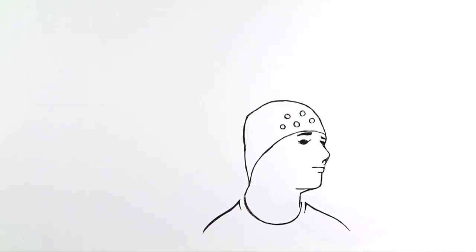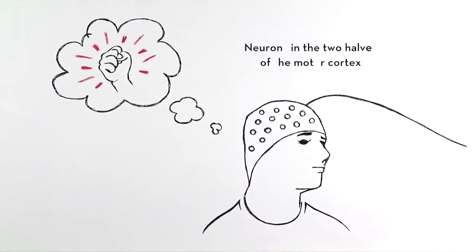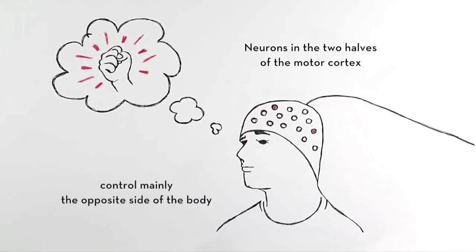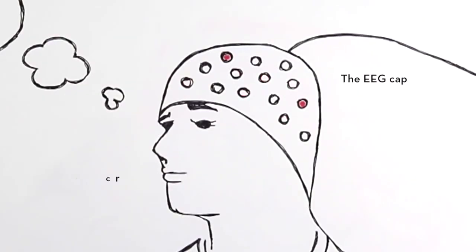Here's how it works. When the controller imagines a movement without actually moving, specific neurons in the brain's motor cortex produce electric currents. These currents are detected by electrodes in an EEG cap,